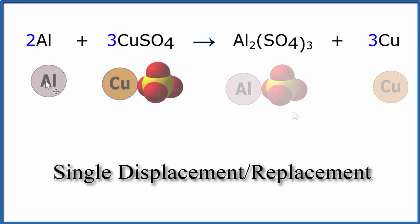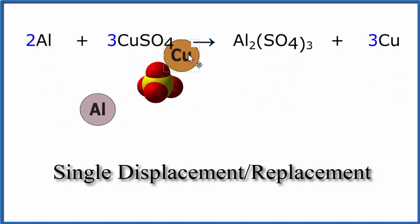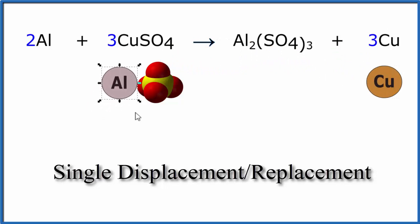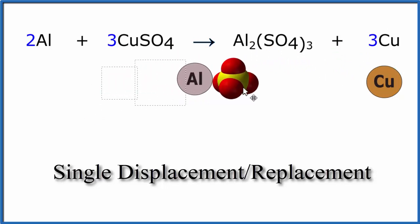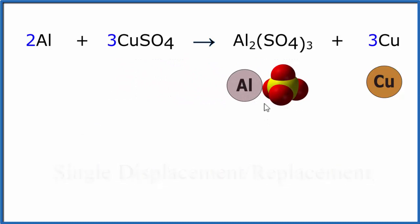Let's watch that again. The aluminum comes in, it pushes out the copper, so we have our copper over here. Now the aluminum forms an ionic bond with the sulfate, and now we have the aluminum sulfate. Single displacement reaction.